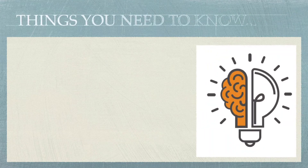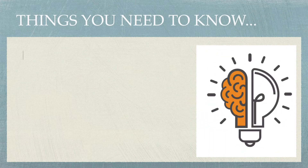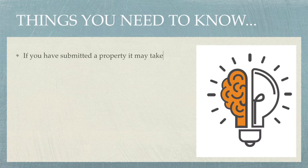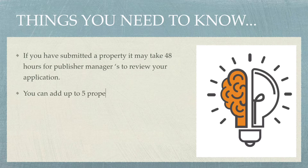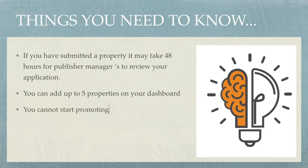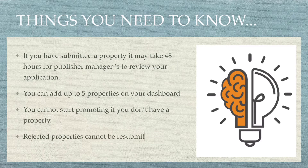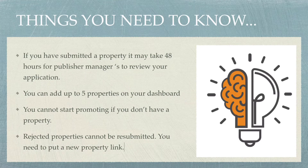Here are the things that you need to know. If you have submitted a property, it may take 48 hours for the Publishers Manager to review your application. You can add up to 5 properties on your dashboard. You cannot start promoting if you don't have a property, and rejected properties cannot be resubmitted — you need to put a new property link.